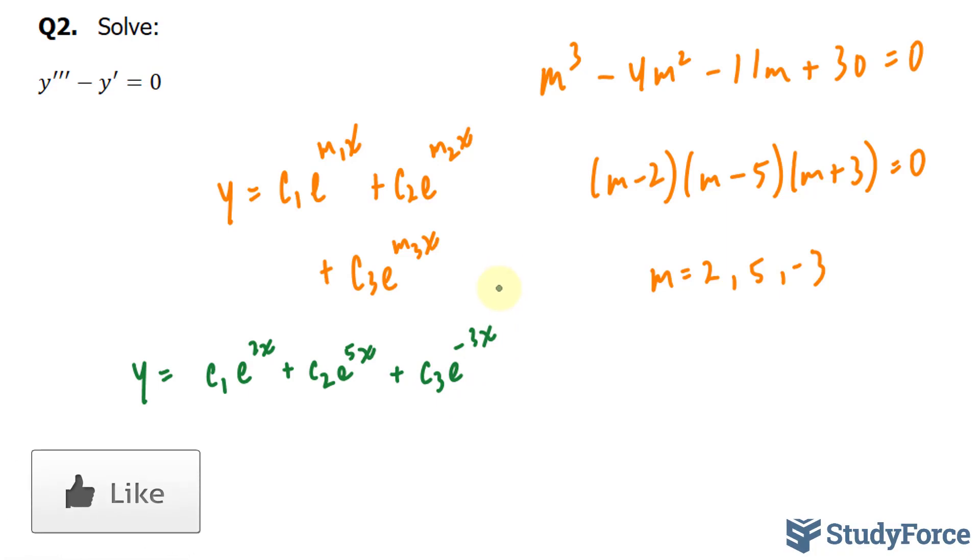In question number two, they ask us to solve y triple prime minus y prime is equal to 0. So once again, I'll write down the auxiliary equation that represents this differential equation. We have m3, which represents this term, minus m, which represents the second.